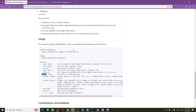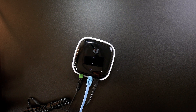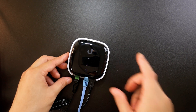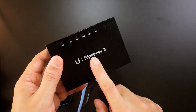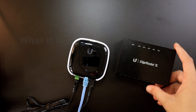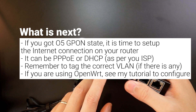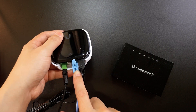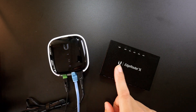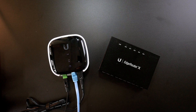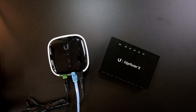After successfully configuring the uFiber Local and getting a working GPON fiber authentication, the next step is to connect a router — such as an x86 router, NanoPi, or any router — to the gigabit Ethernet port. Then you need to set up a PPPoE or VLAN client on your router to establish your internet connection. That will be all for this tutorial — I hope it is useful for you. Thanks for watching and see you in the next video.